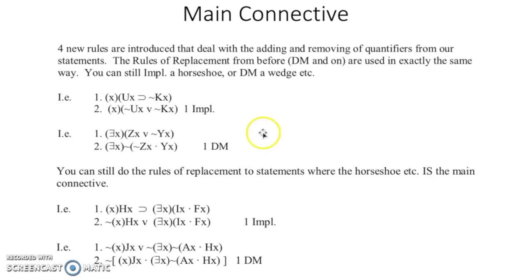To get started you need to understand the main connective, still very important just like it has been this entire semester. These up here and this one right here, the main connector is actually the quantifier. So this one since it has that X with the parentheses on the outside, that is the main connector for this entire line. And you can still do implication inside, and there's an example of how you do that here. The main connector is the existential quantifier.